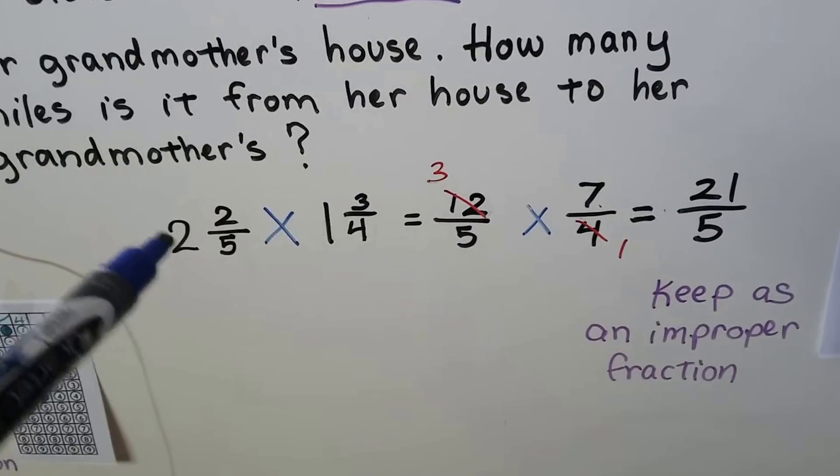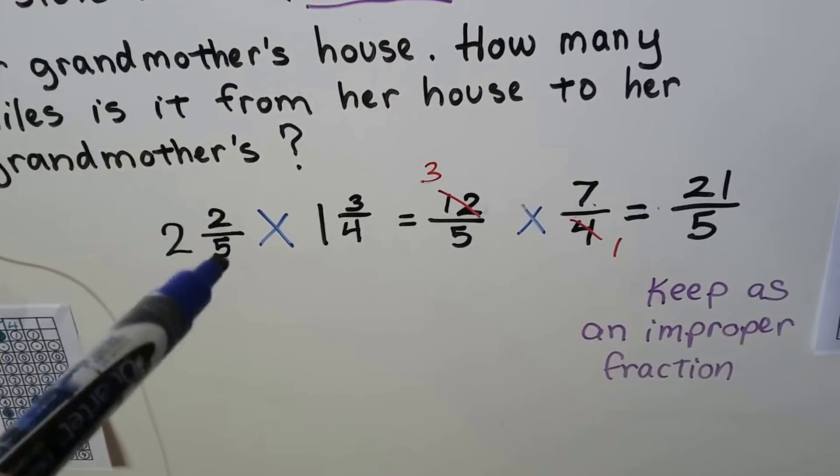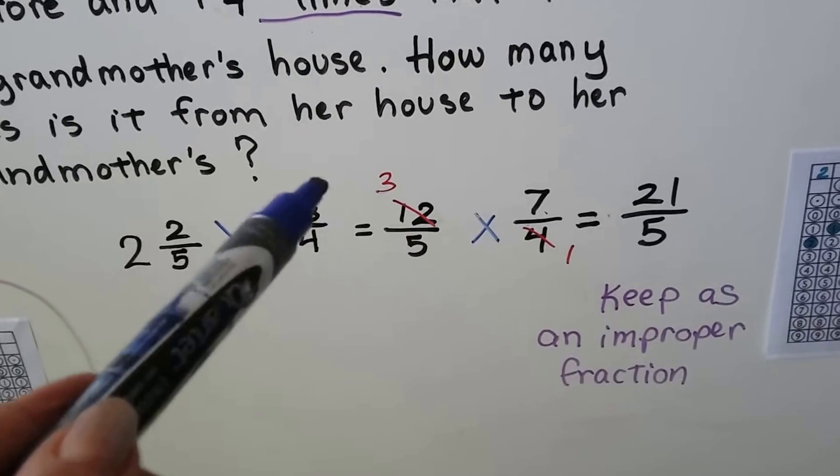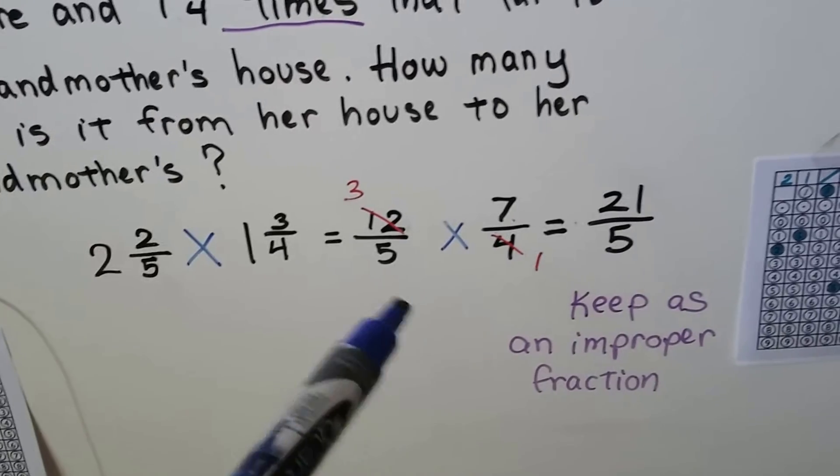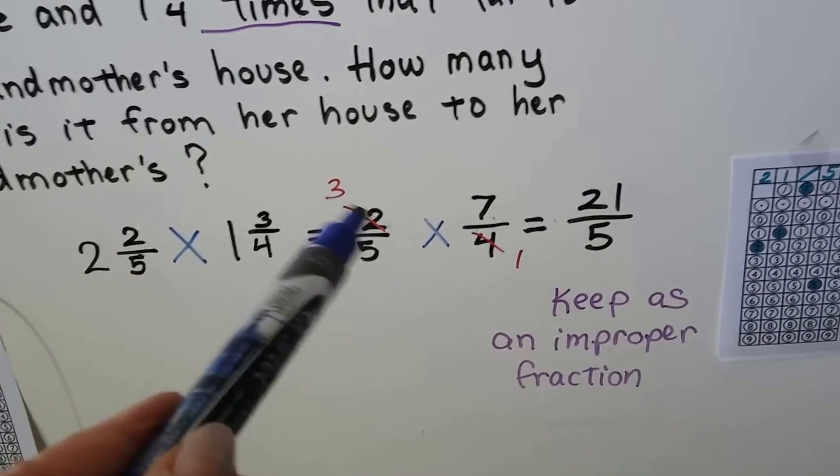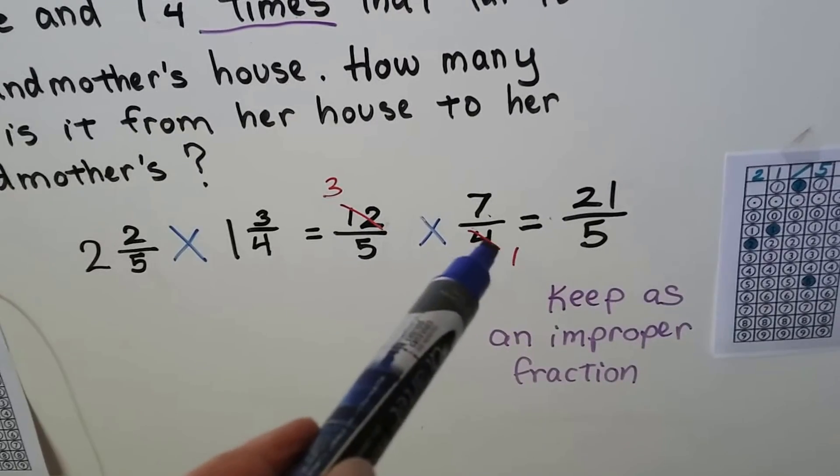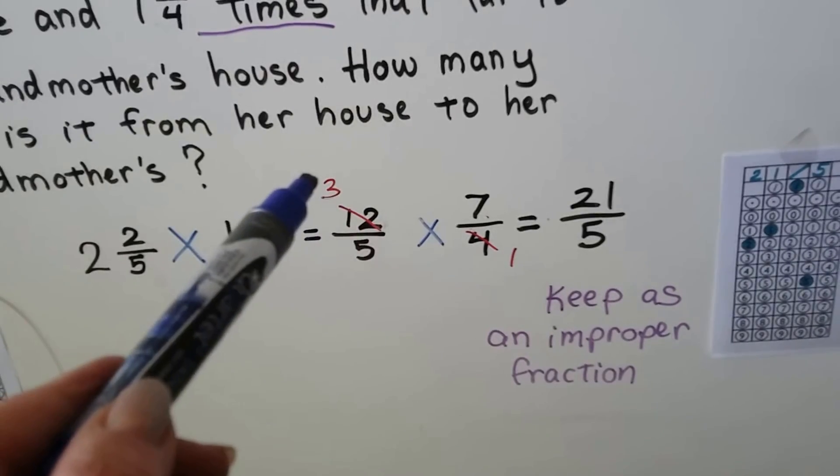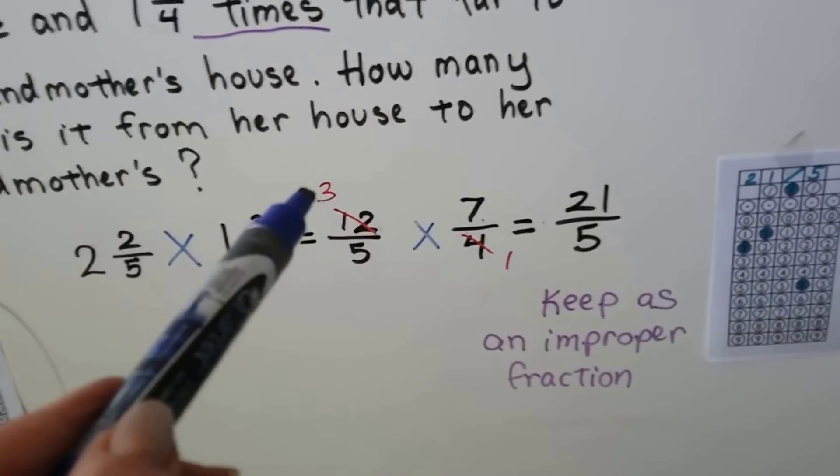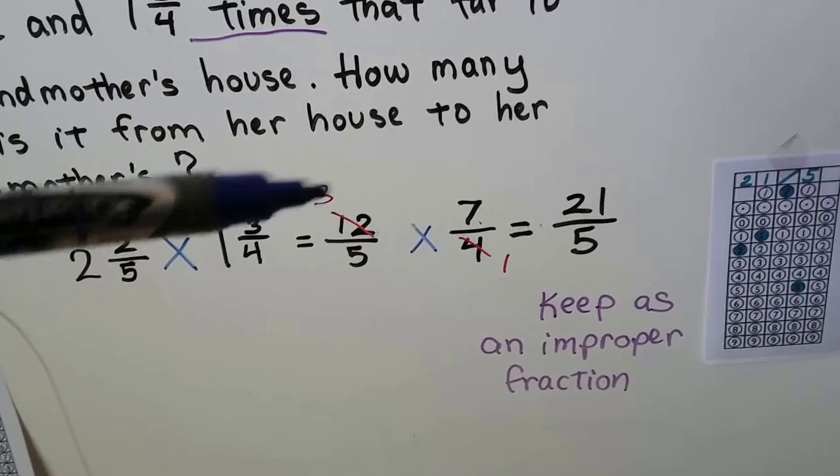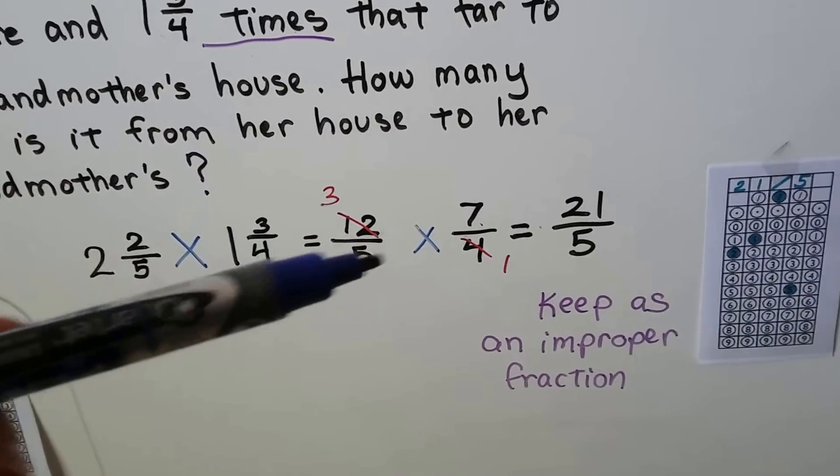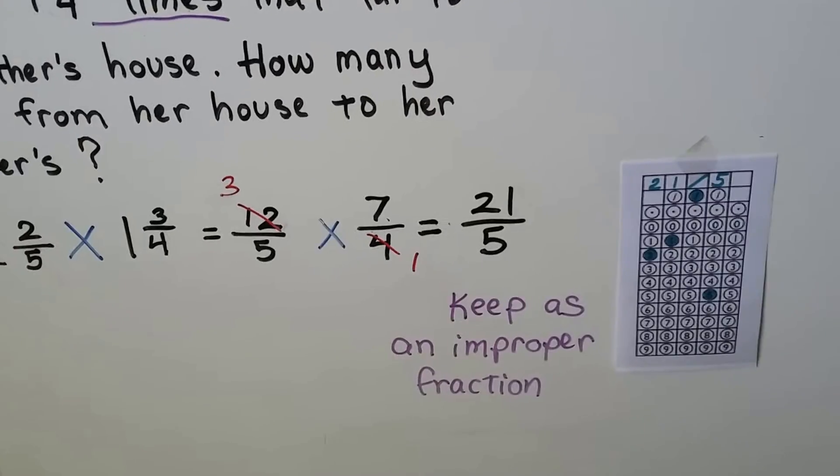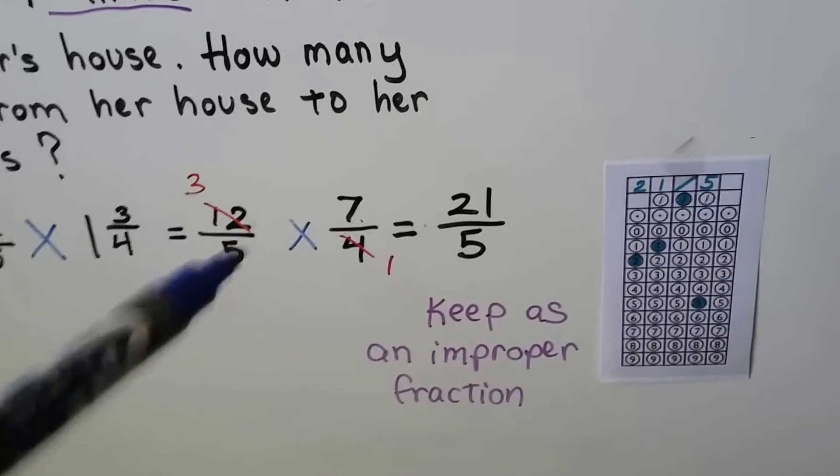This can be turned into 2 times 5 is 10, plus 2 is 12/5s, and this is 1 times 4 is 4, plus 3 is 7/4s. We have a 4 here and a 12 here. There's one 4 here, so we cross it out and make a 1, and there's three 4s here, so we cross it out and make it a 3. Now we can do 3 times 7 is 21 over 5 times 1 is 5.